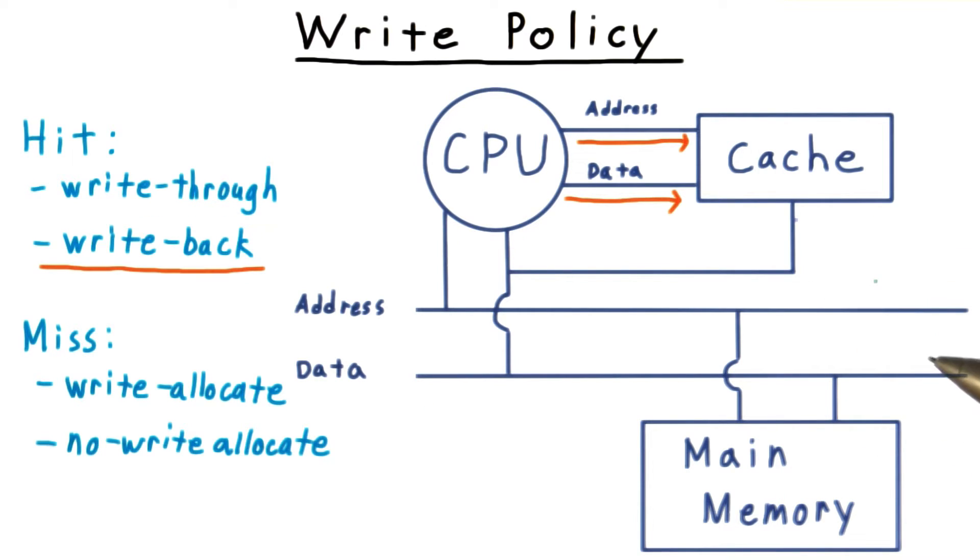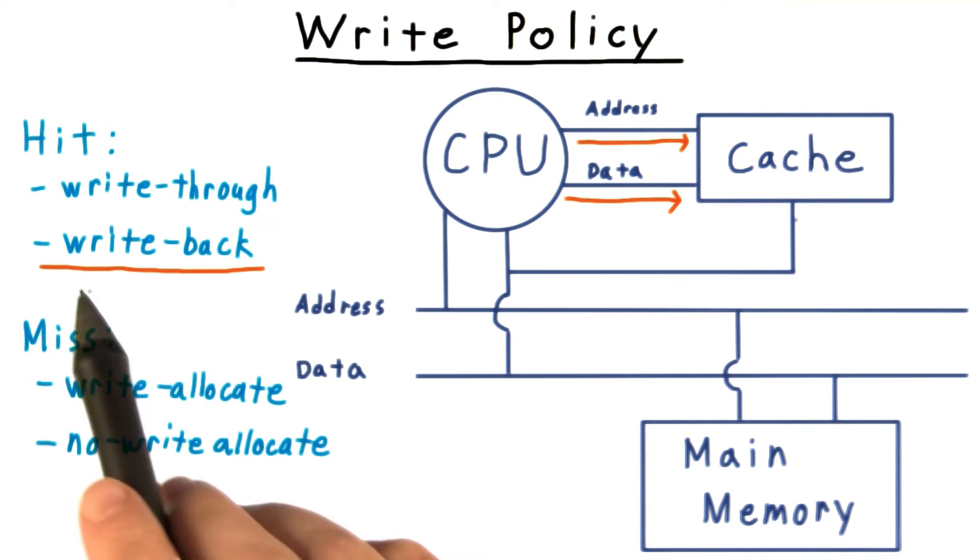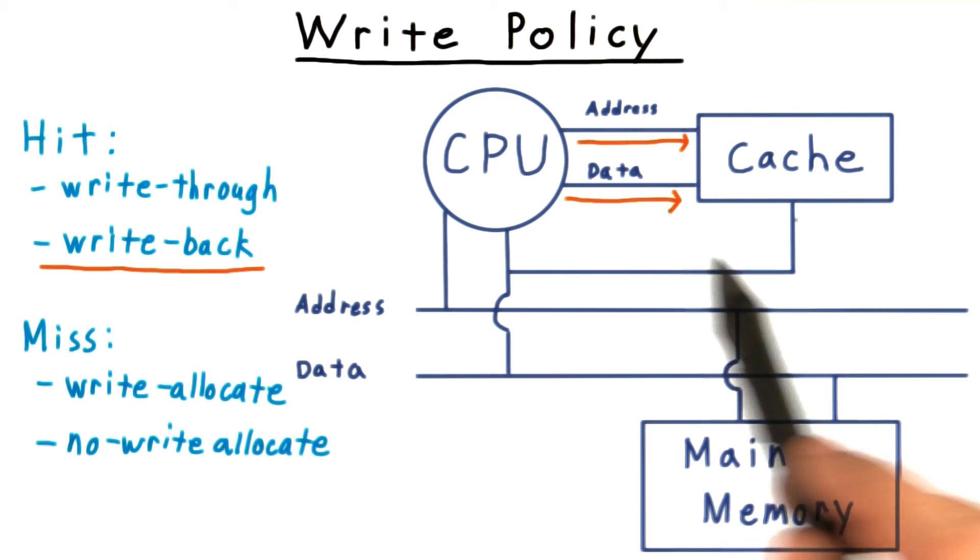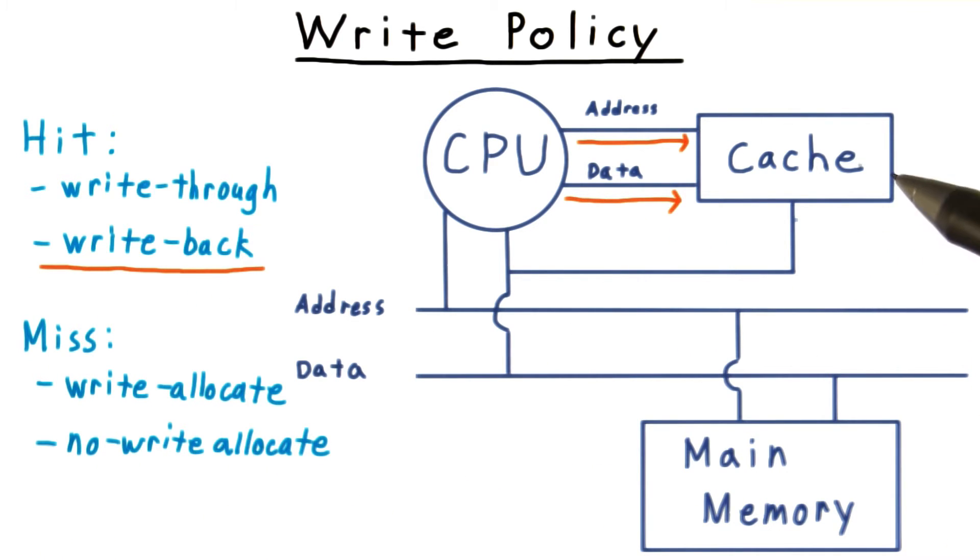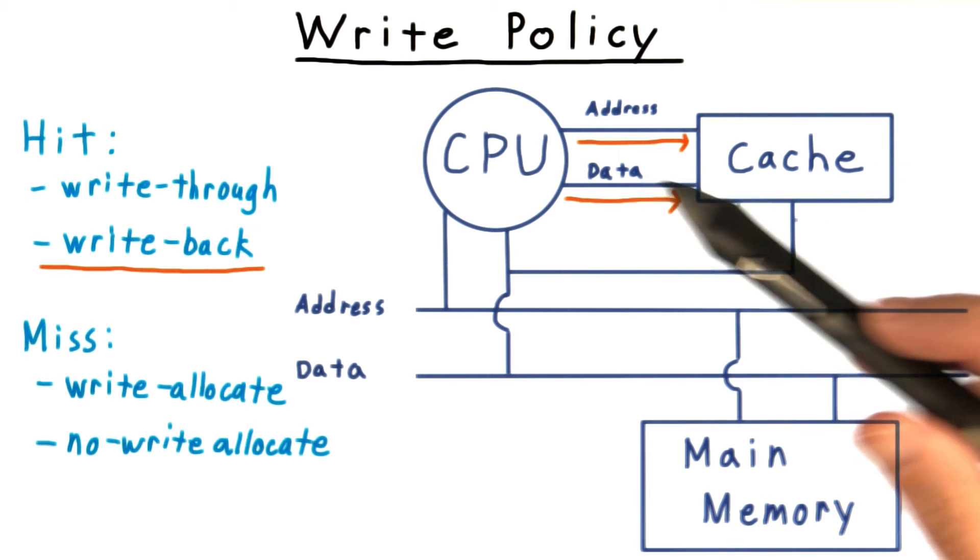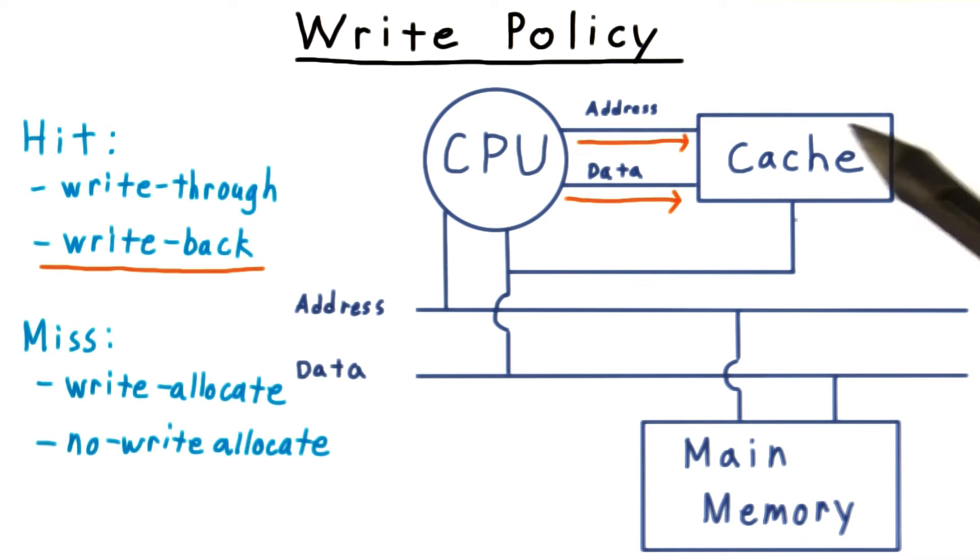As long as I don't have to worry about some other entity needing an updated version from memory, however, there's actually no need to write everything this instant. This is the insight behind the write-back policy, which only writes to the cache. After all, that's where we will look first if the same processor tries to read the data or write to it later.